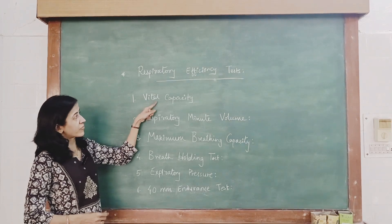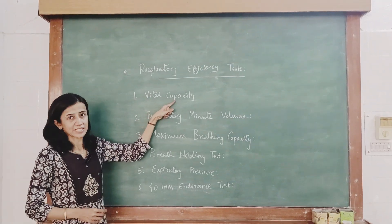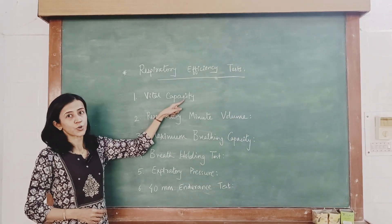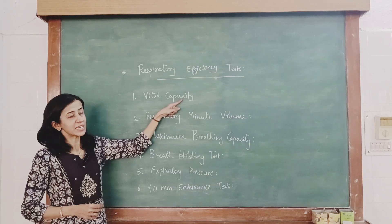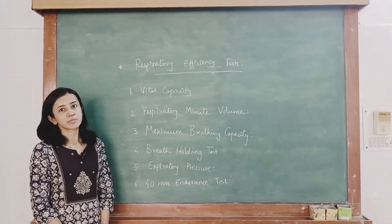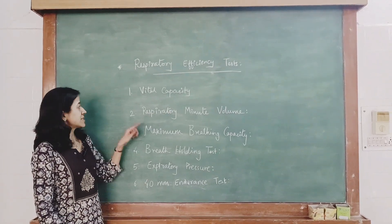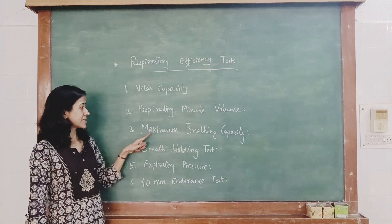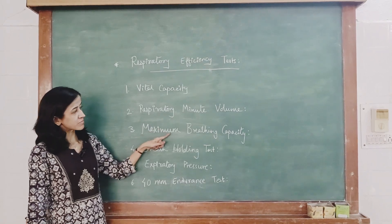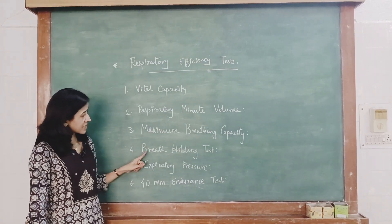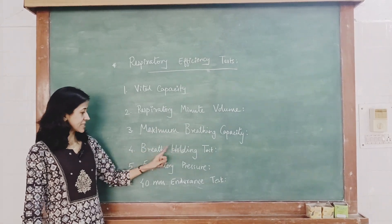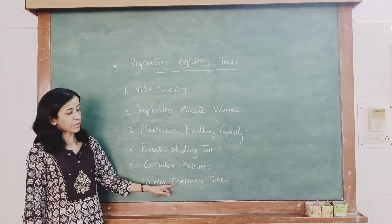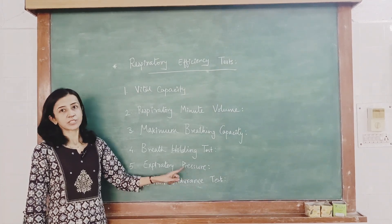Number one, we will perform vital capacity — this has been covered in our previous video on spirometry, link shared in the description box. Second, respiratory minute volume. We will also discuss maximum breathing capacity, breath holding test, expiratory pressure test, and 40 mmHg endurance test.